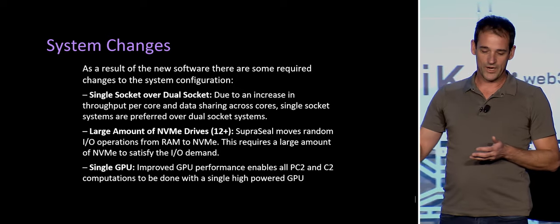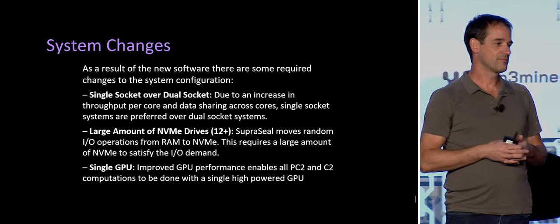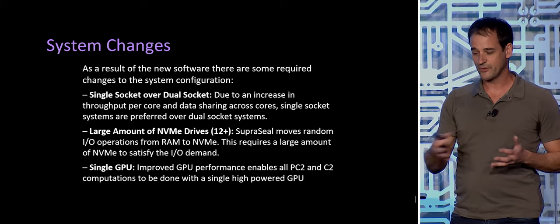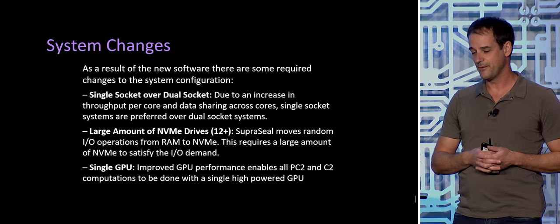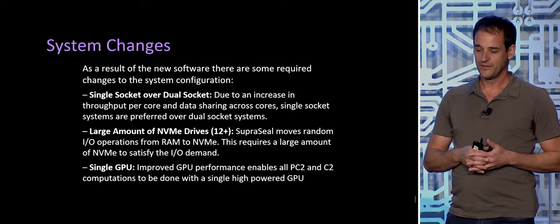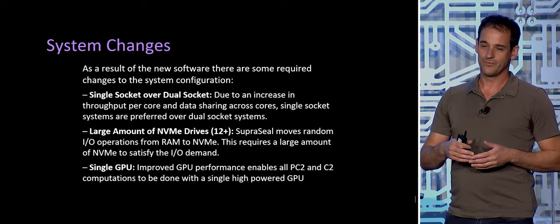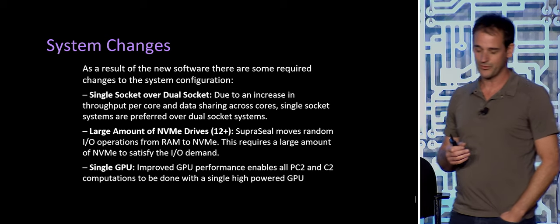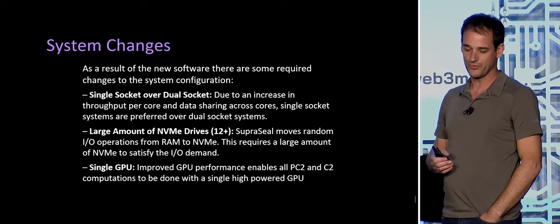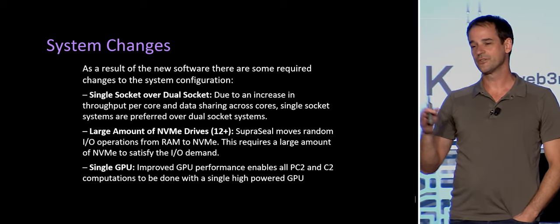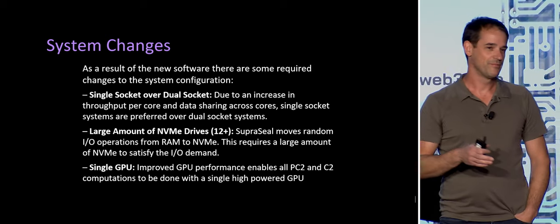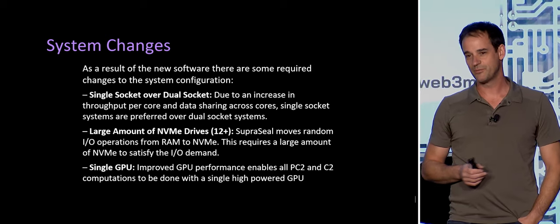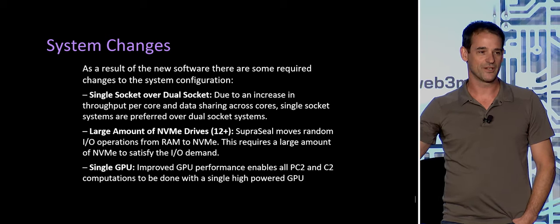We shifted from RAM to NVMe — storage providers used to deploy a terabyte of memory, but now you can decrease that and deploy NVMe instead, both decreasing memory requirements and increasing the number of sectors performed, so it's a net big improvement. We've also reduced to a single GPU. By making the GPU and the software much more efficient, we can deploy a single high-end GPU that can keep up with all the other steps needed.